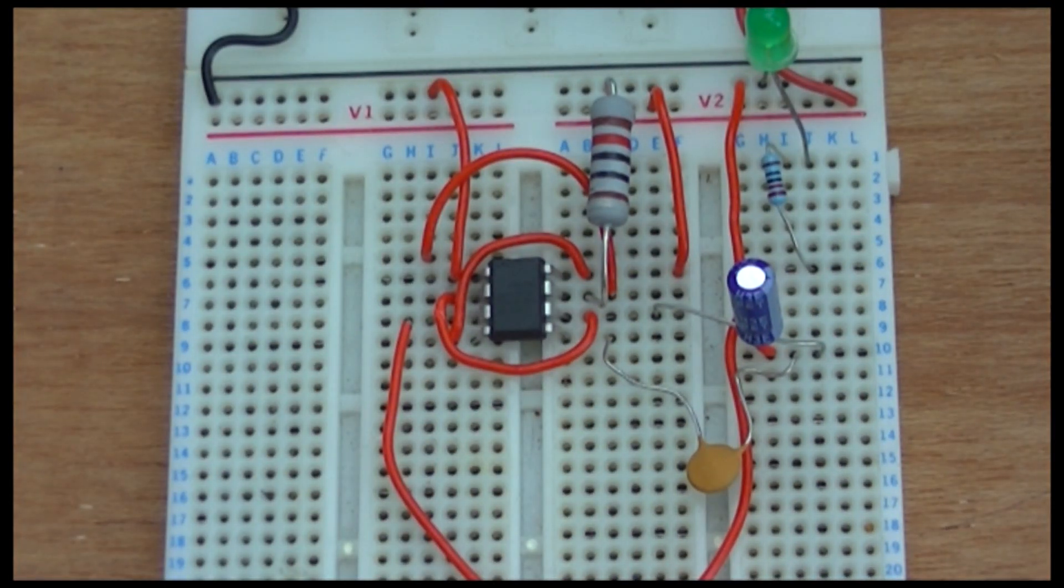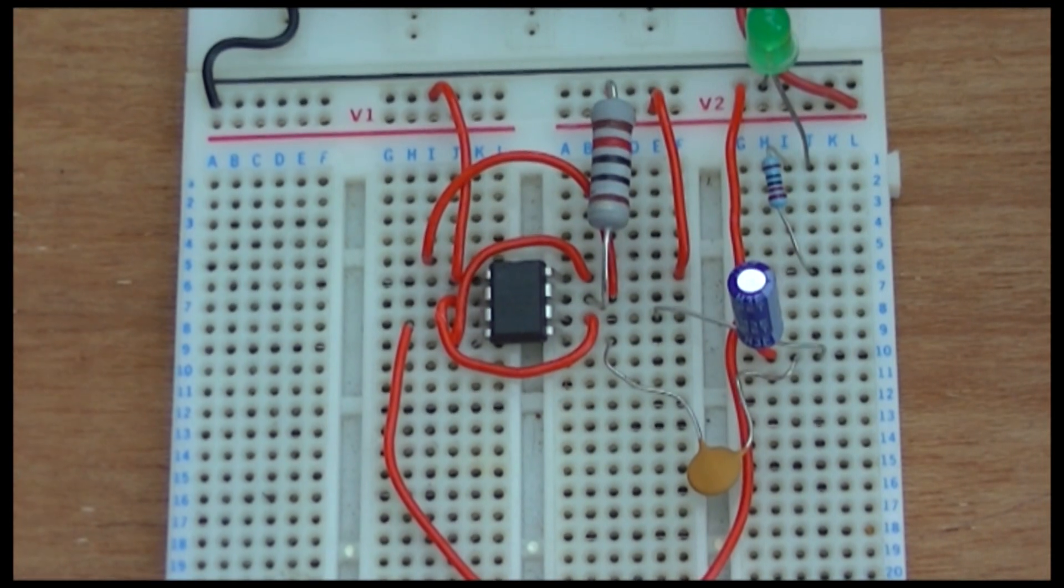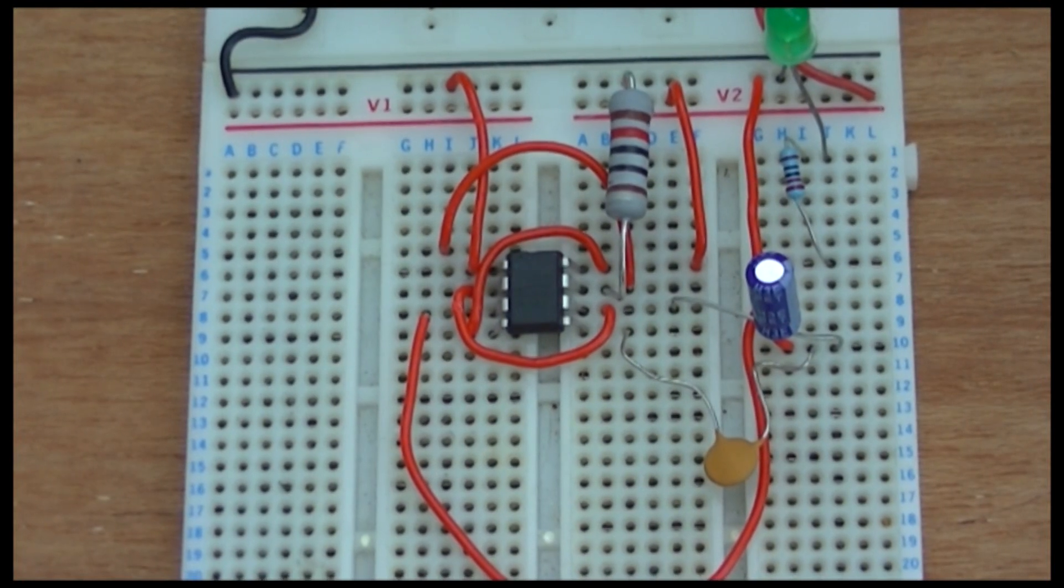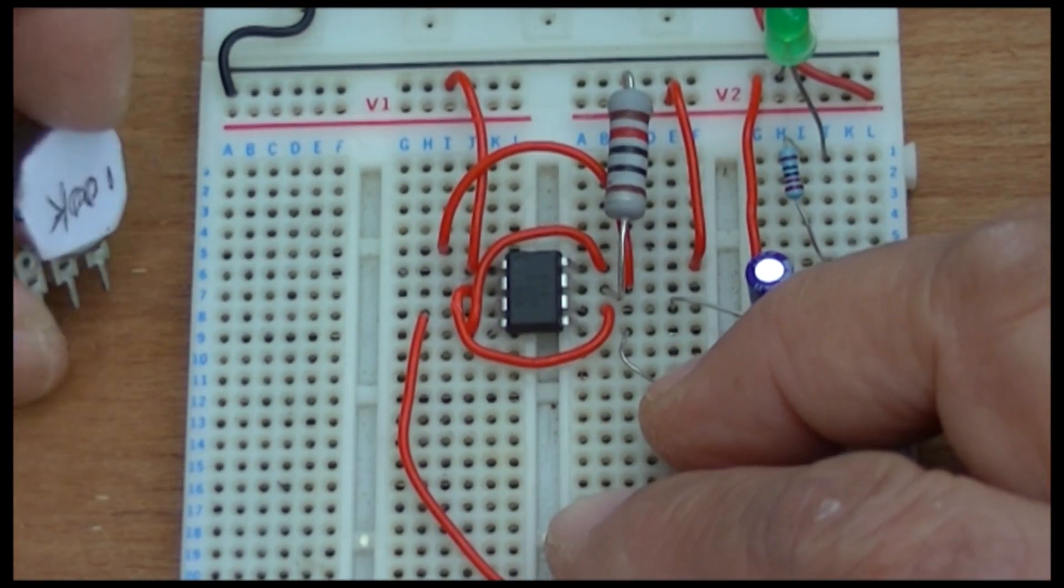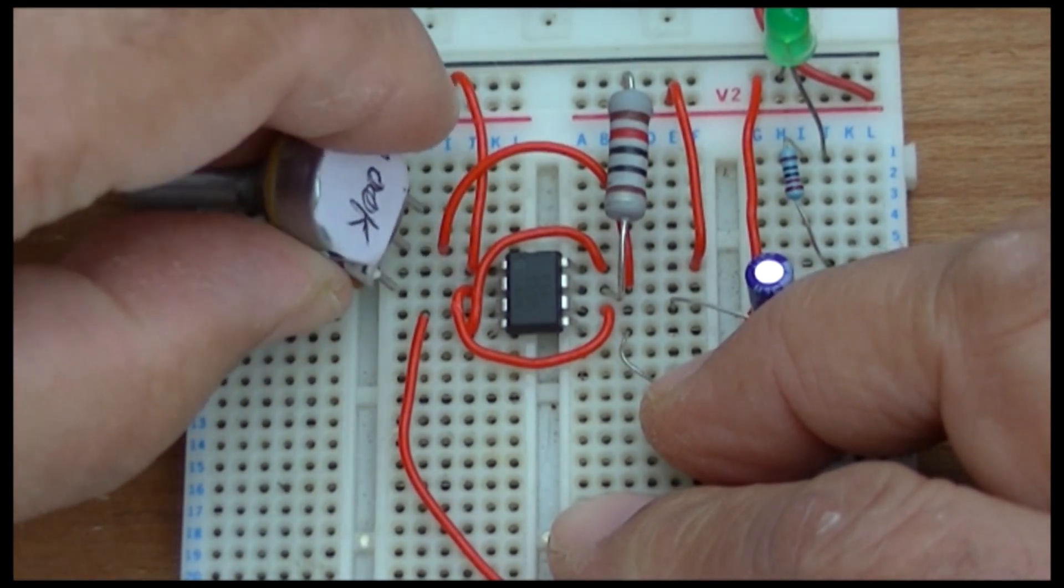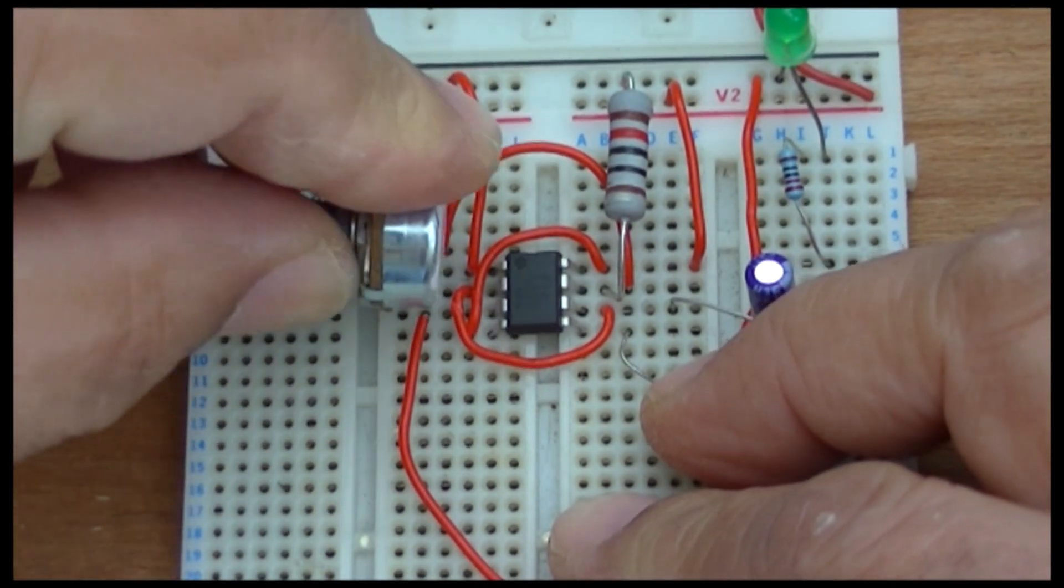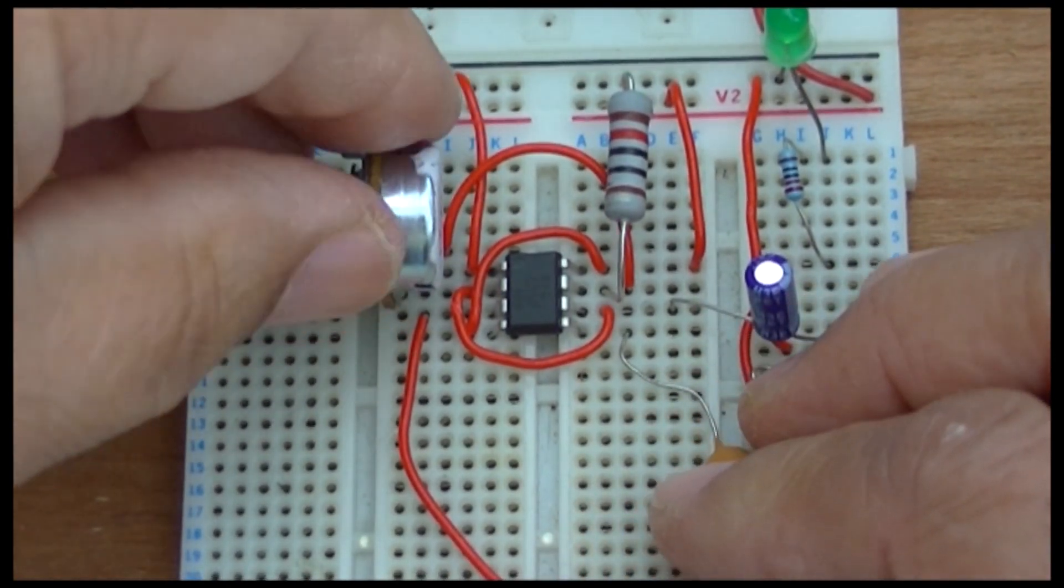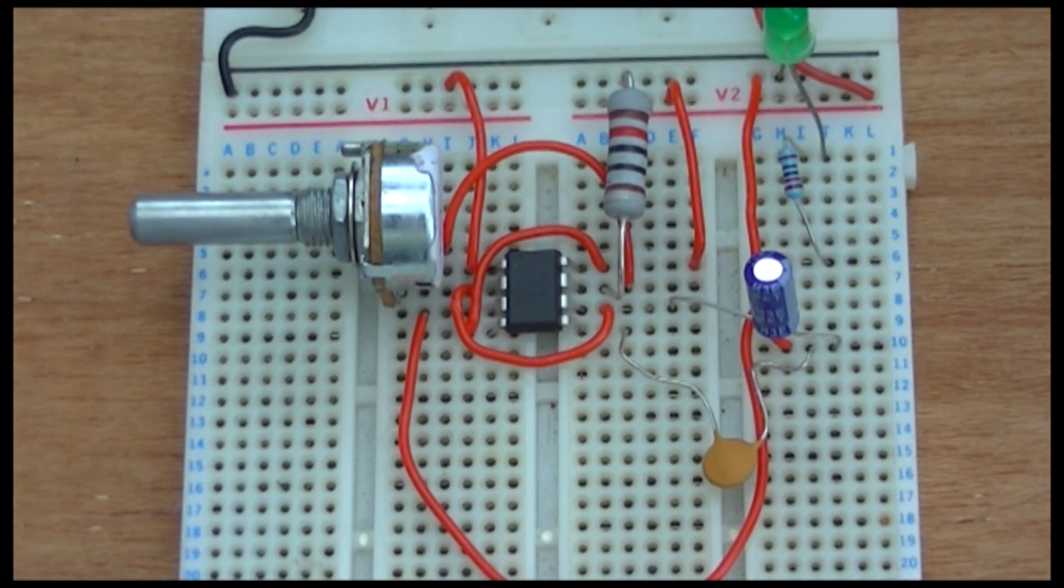The last one is this pot which goes from number two to number seven. I've already got the lead from number seven here, so this should be number two. That's it.